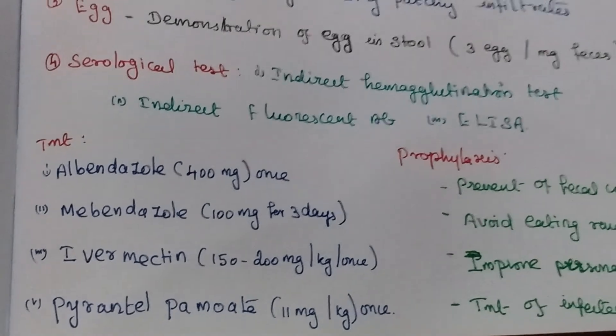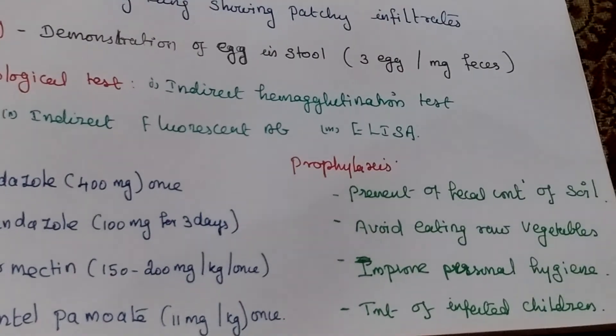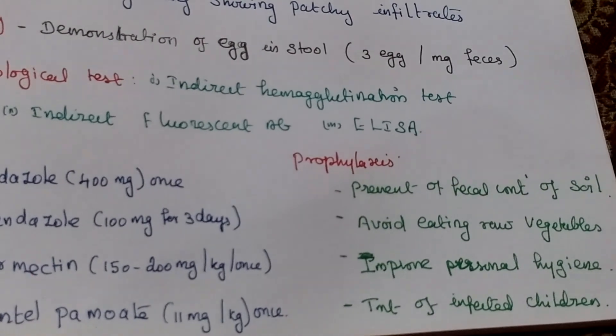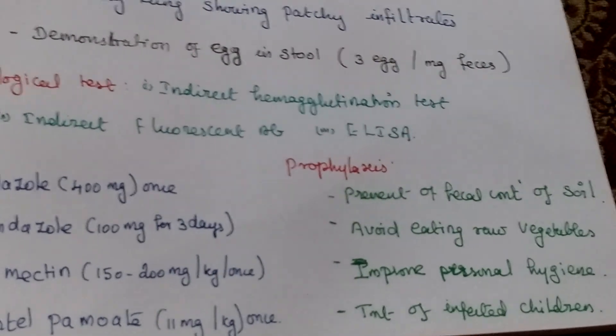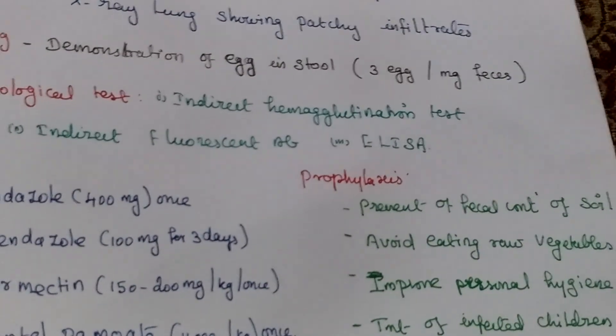Treatment: Albendazole, Mebendazole, Ivermectin. Prophylaxis methods: prevent fecal contamination in soil, avoid eating raw vegetables, improve personal hygiene. Treatment of infected children.